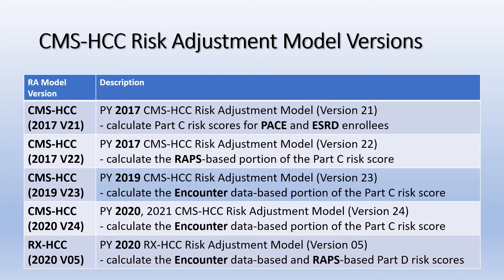PACE risk scores will continue to be calculated based on diagnoses from RAPS, encounter data, and FFS in equal measure with no weighting. For Part C non-PACE risk scores for Payment Year 2021 (2020 dates of service), CMS will use a new model that incorporates condition counts to calculate the risk score using diagnoses from encounter data, RAPS inpatient data, and FFS. We refer to this model as the V24 model.